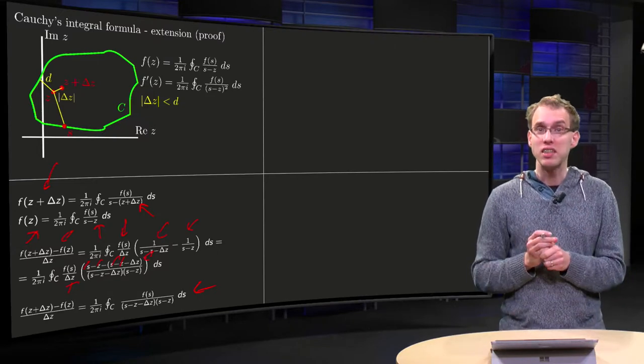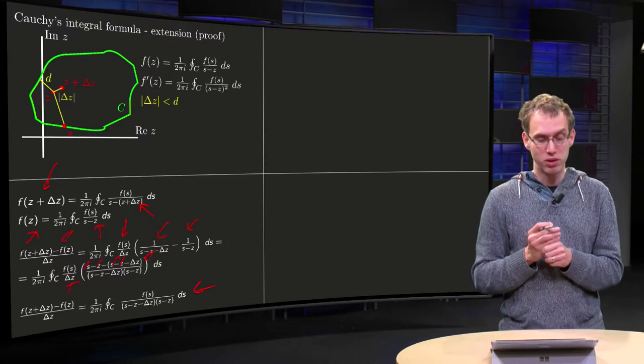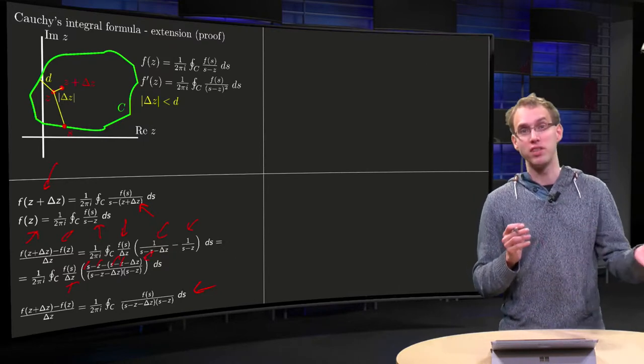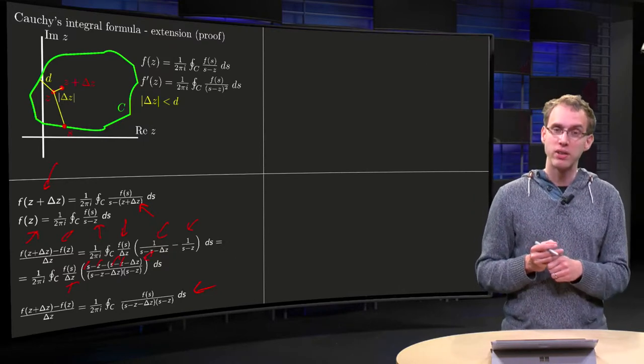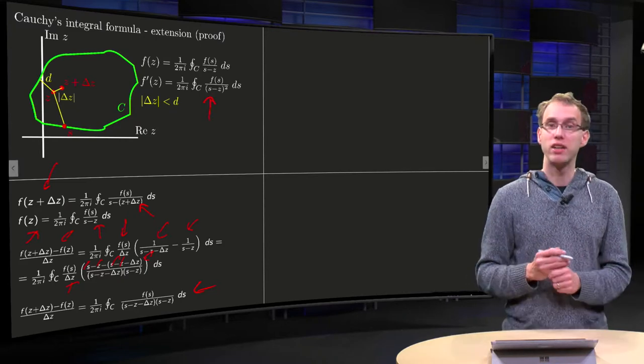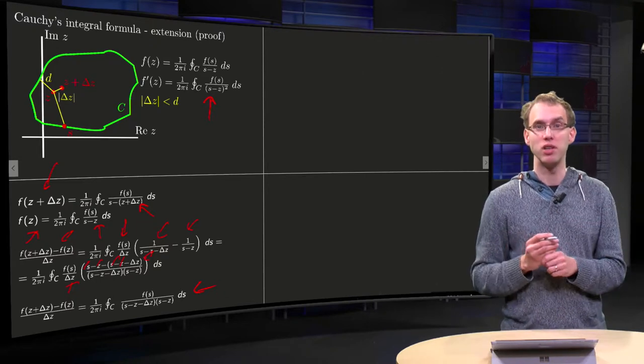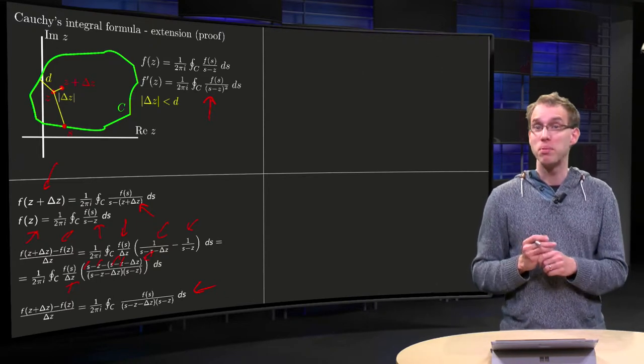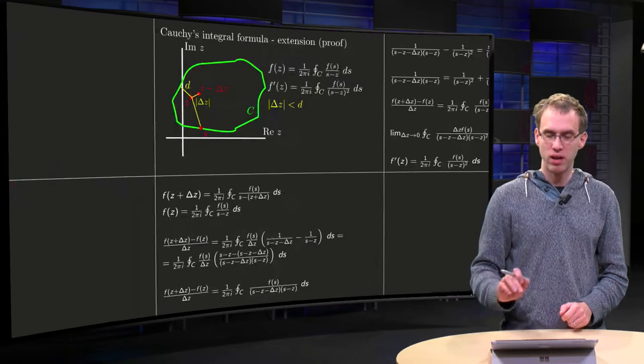Now if you take delta z to zero, you can see what's going on. If you take delta z to zero, on the left hand side you get f' of z, and on the right hand side you already see this formula creeping up by just putting delta z to zero. Well, we have to do the last step a bit more careful, so how do we do that?